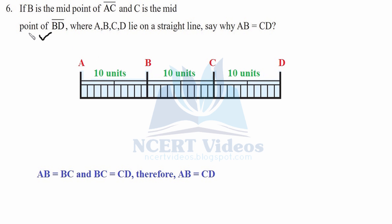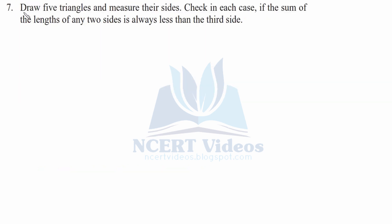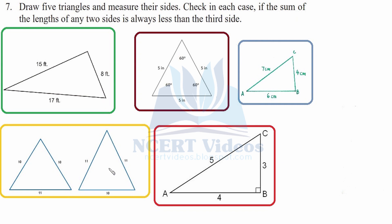Question seven: draw five triangles and measure their sides. Check in each case if the sum of the lengths of any two sides is always less than the third side. We construct triangles and check: 6 plus 4 is 10, which is not less than 7; 7 plus 4 is 11, not less; 7 plus 6 is 13, not less than 4. For another triangle: 5 plus 4 is 9, not less than 3; 5 plus 3 is 8, not less than 4.